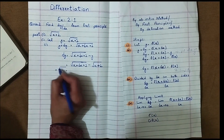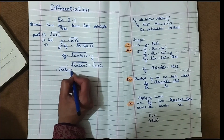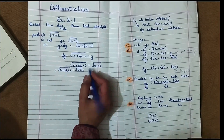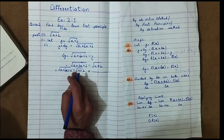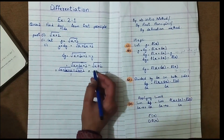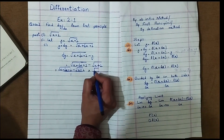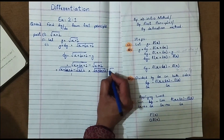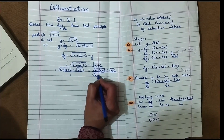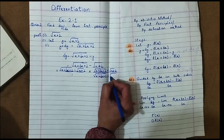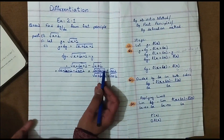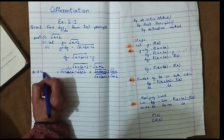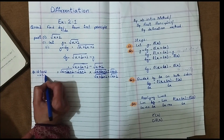To rationalize, we have under root x plus delta x plus 2 minus under root x plus 2. We multiply and divide by the conjugate, changing the sign to positive. We multiply by under root x plus delta x plus 2 plus under root x plus 2 over under root x plus delta x plus 2 plus under root x plus 2.